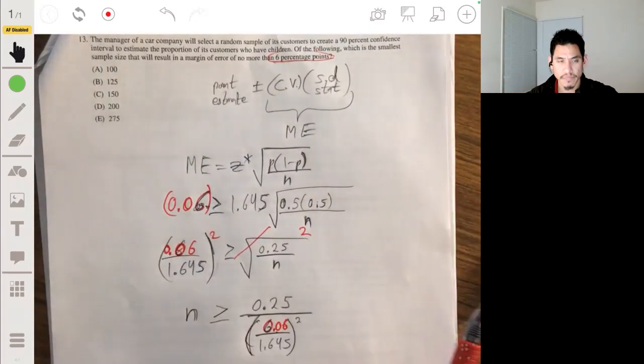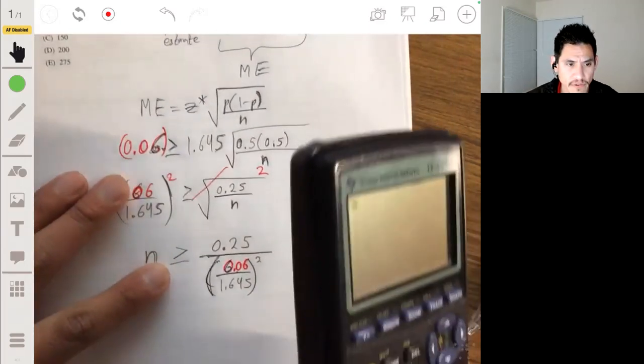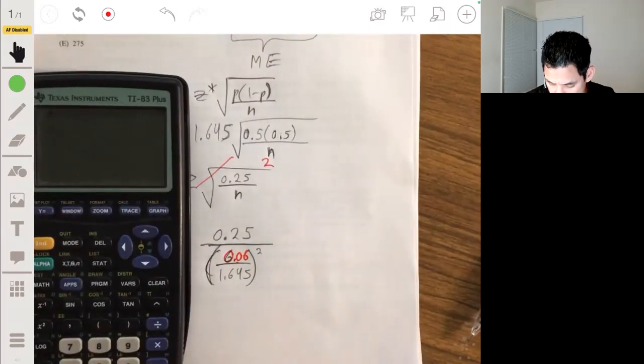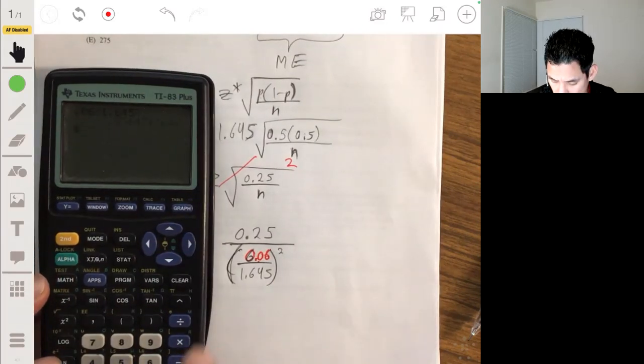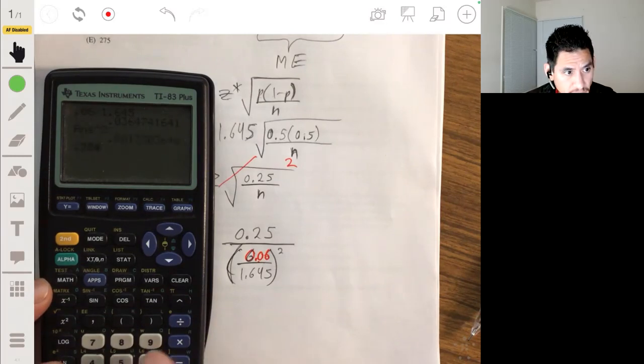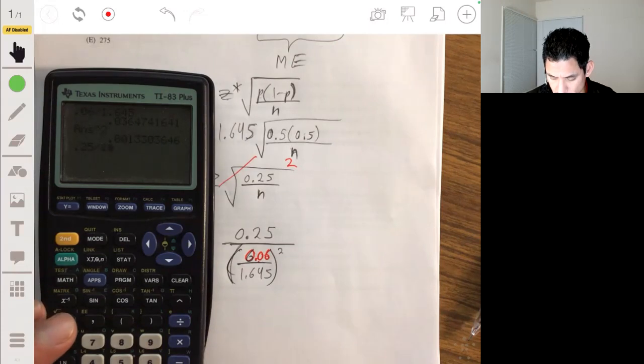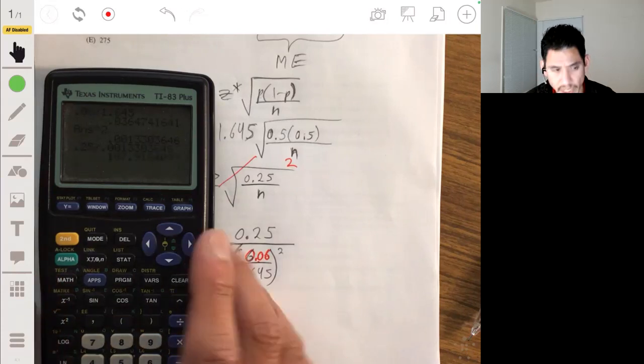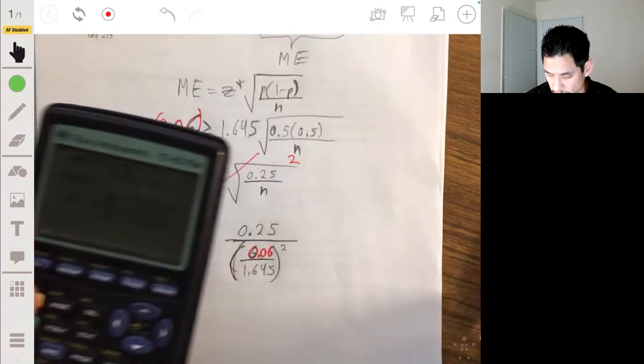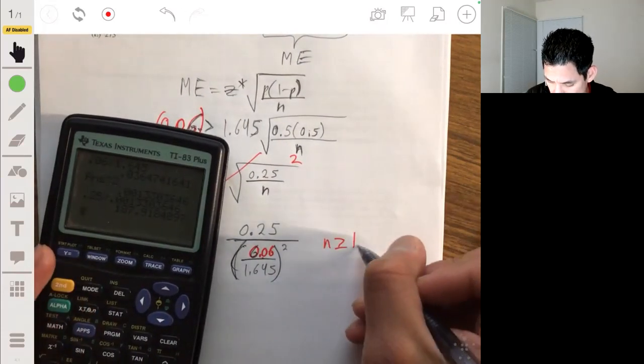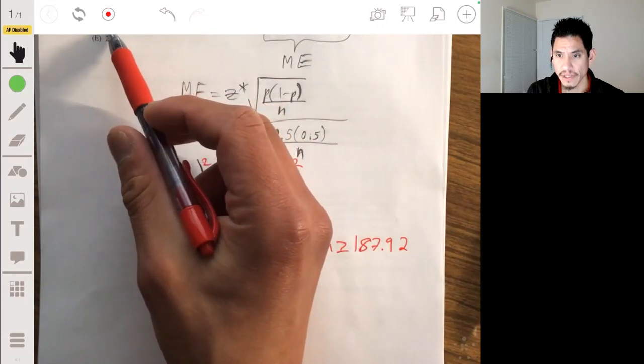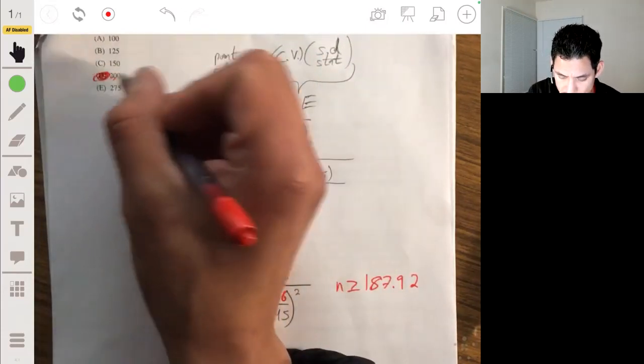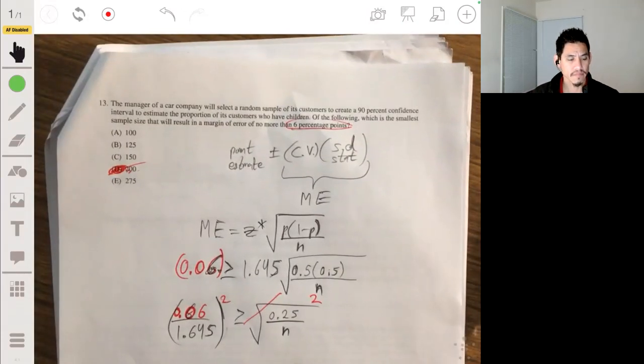So let's fix that 0.06. So this whole thing 0.06. So that point, that should be 0.06 because we're talking about percentage. Yeah, that was a good mistake because stuff like this can slip your mind easily as it just did here for me. So let's redo this. So 0.06, 0.06 divided by 1.645 in that group. Square that and do 0.25 divided by that whole quantity. 0.0013303646. And so we get n to be about at least 188 or n should be greater than or equal to 187.92ish. And so the answer will be D. You need at least 200. All right.